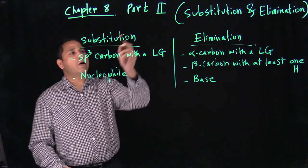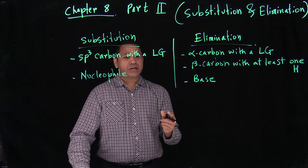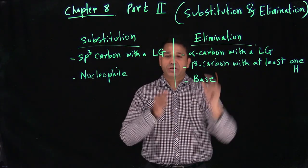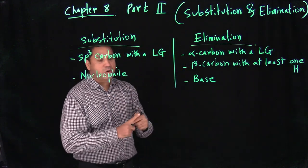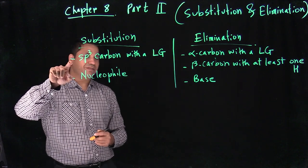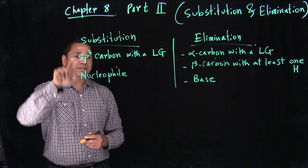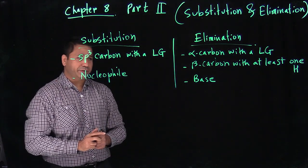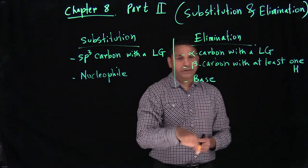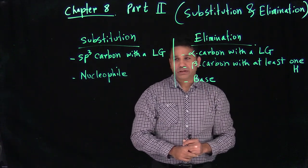Here's Chapter 8 Part 2. Chapter 8 Part 1 was elimination reactions; now in Part 2 we'll be combining substitution and elimination together. Let's go back and revise what we learned before. For substitution, we need an sp3 carbon with a leaving group and a nucleophile. For elimination, we need an alpha carbon with a leaving group, a beta carbon with at least one hydrogen, and a base.